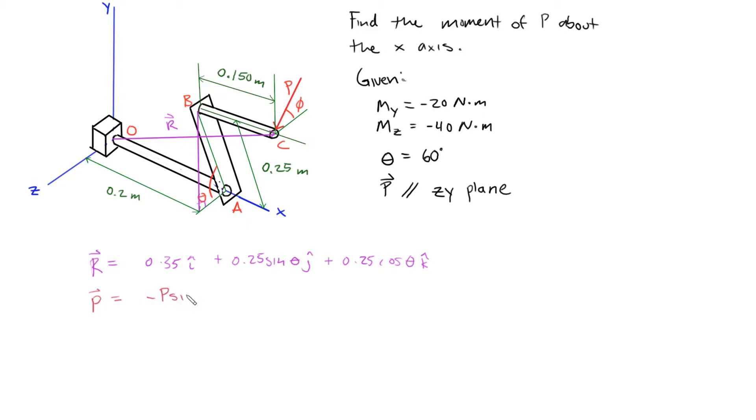And then for the k component, this is actually going in the positive direction, so we just use the positive cosine of that force. So P cosine phi k.